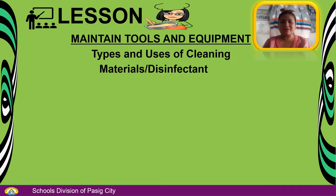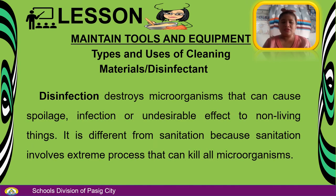Let's discuss about maintained tools and equipment — types and uses of cleaning materials. Disinfectant: Disinfection destroys microorganisms that can cause spoilage, infection, or undesirable effects on non-living things. It is different from sanitation because sanitation involves an extreme process that can kill all microorganisms.